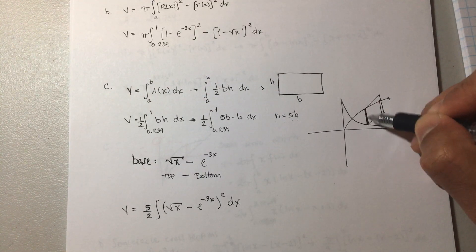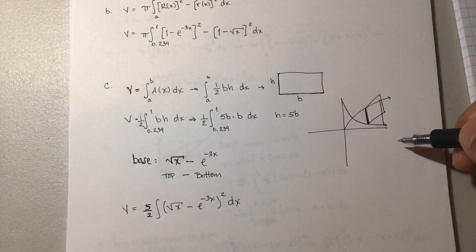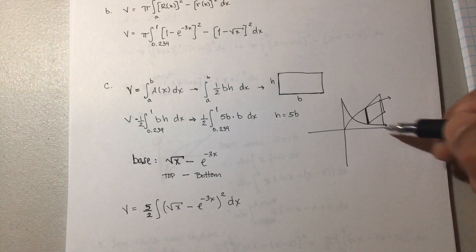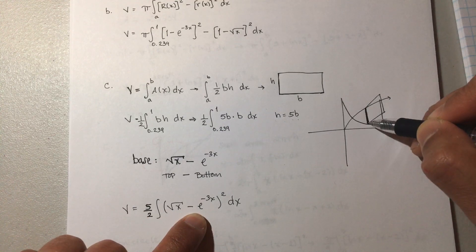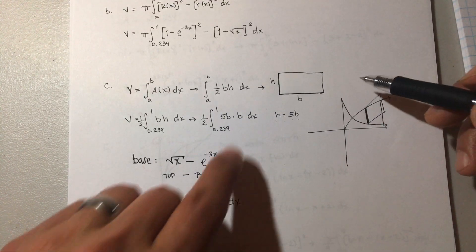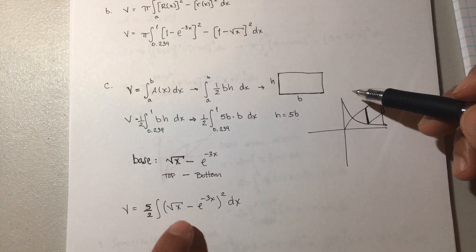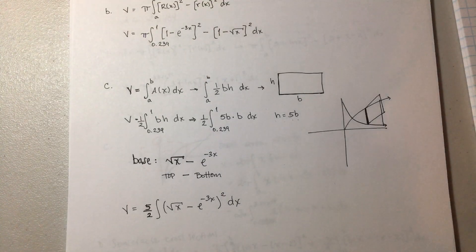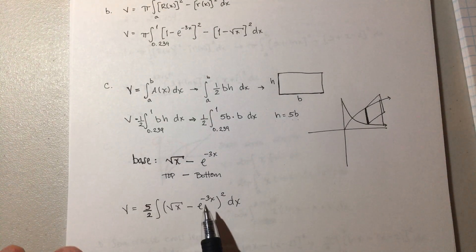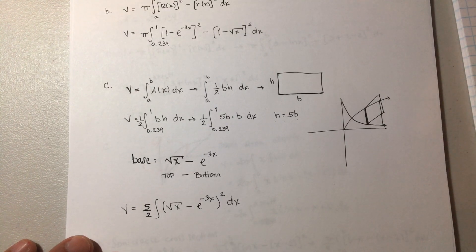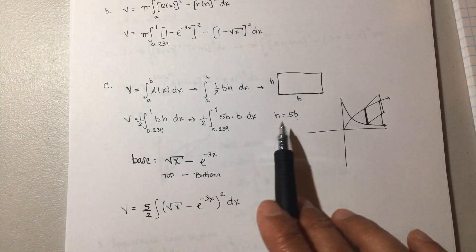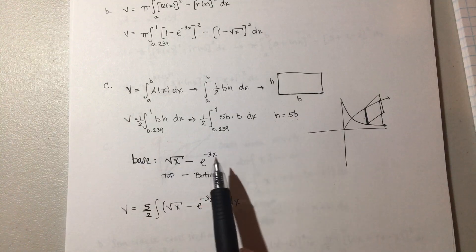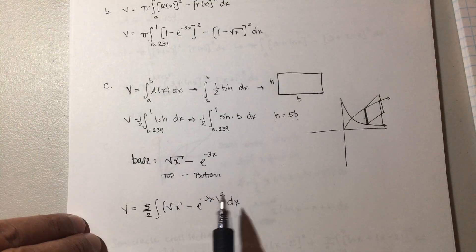Now what is the base? The base is the distance between the two curves — top minus bottom. The top function is square root of x minus e to the negative 3x. We square it because of the formula: one-half base times height. Notice there's no pi because we are not rotating — it's just a bunch of rectangles coming out of the page. Integrate the area and you get your value.